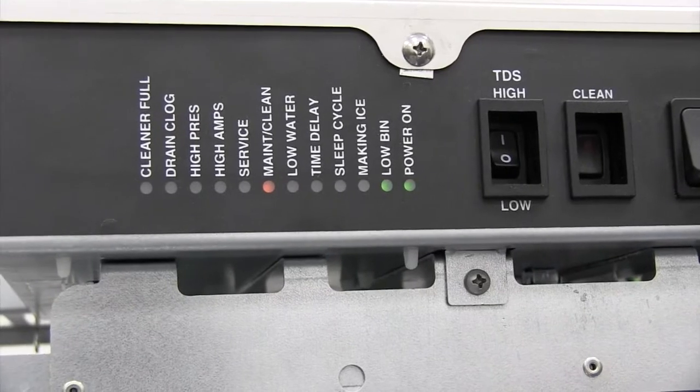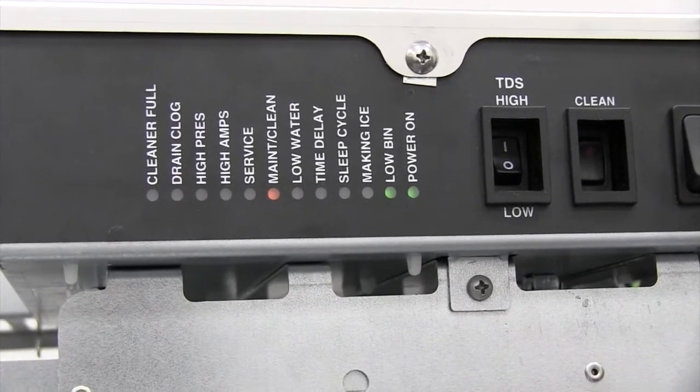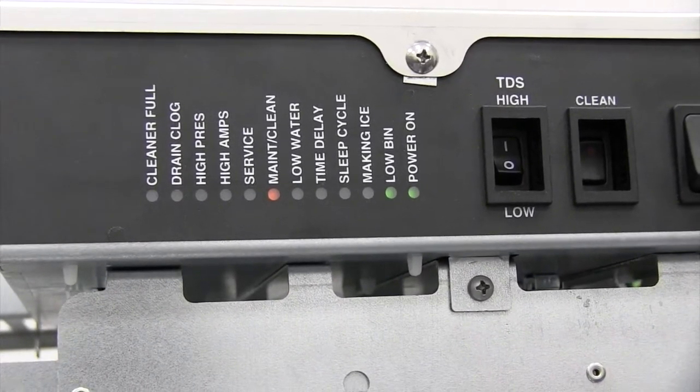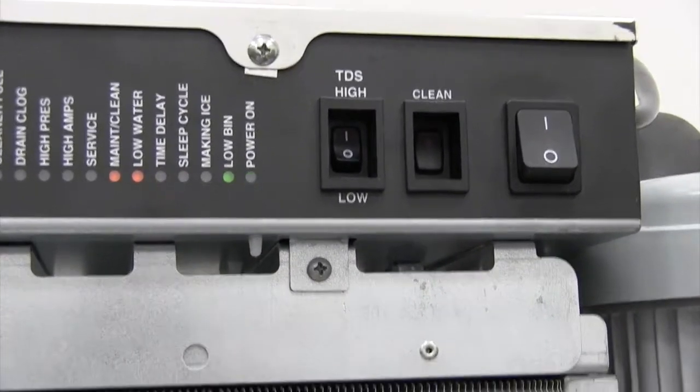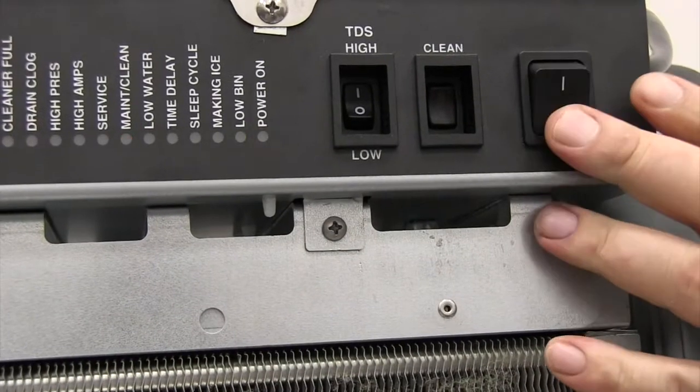Then we're going to wait until we have a low water light, and then we can pull that valve apart and inspect or clean it. Now that our low water light is turned on, we can shut the power off.